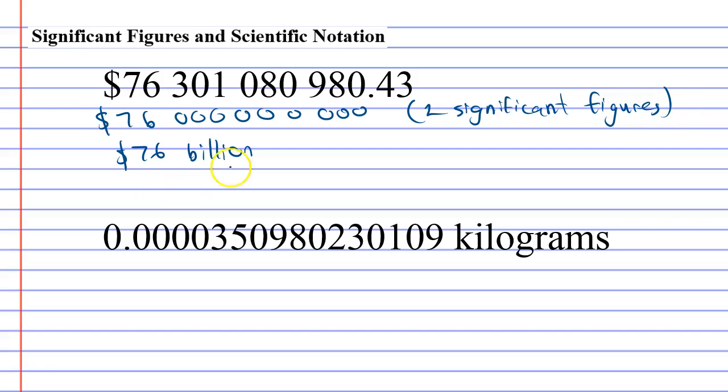It can also be applied with decimals. For instance, if we're talking about a very small weight such as the weight of a cell, it might be 0.0000350980230109 kilograms. Once again, the media aren't going to bother reading out that whole number. They might go as far as just keeping the three and the five and going 0.000035 kilograms, and once again we've rounded to two significant figures.